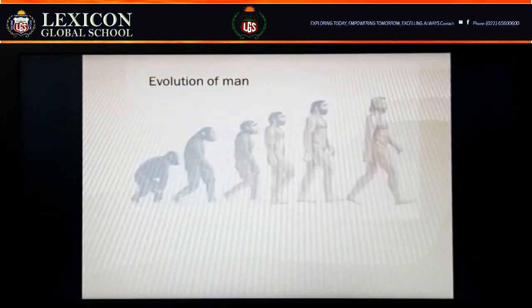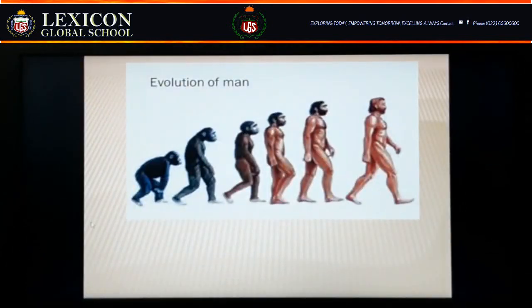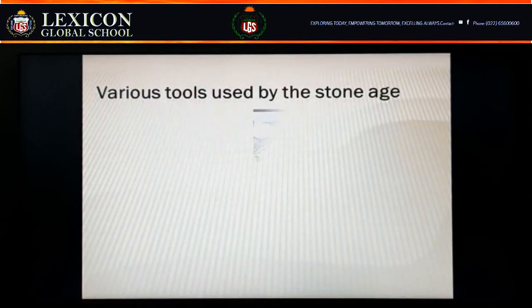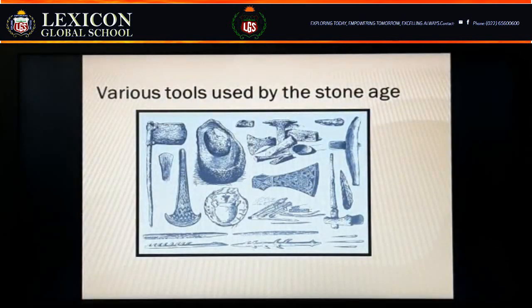Here we will see the evolution of man. These are some of the stages of the evolution of man. How did things happen in the past? We need to examine the sources and evidence thoroughly. In the further session, we will see how the primitive man evolved from apes. These are some of the various tools used by early stone-age people.